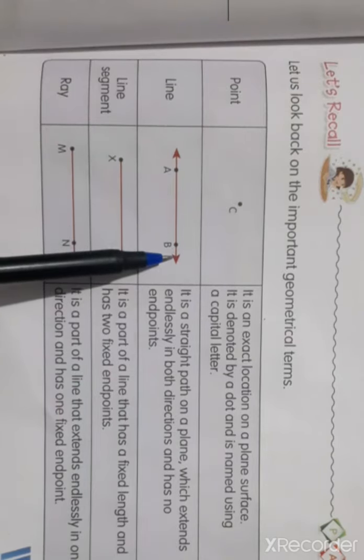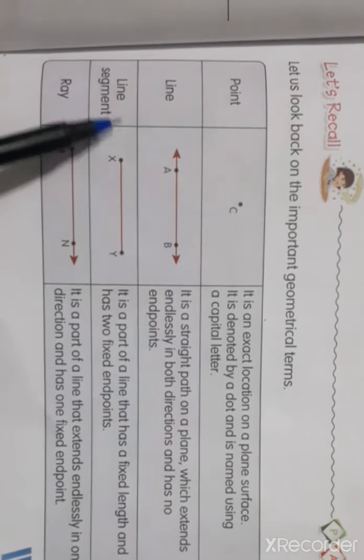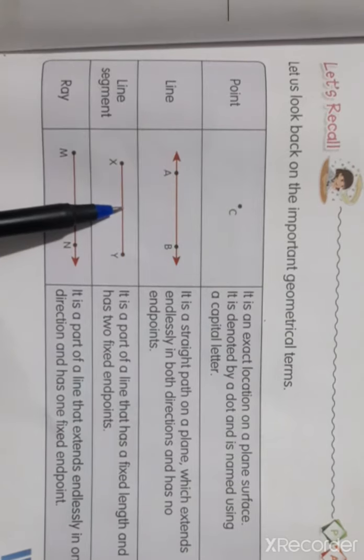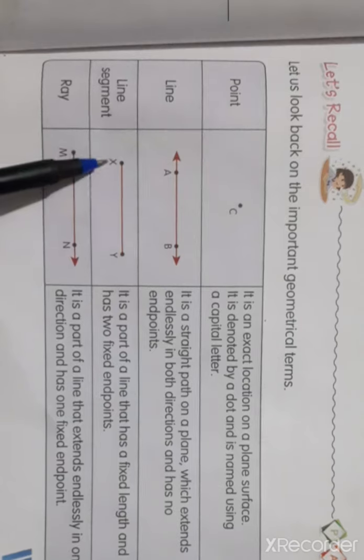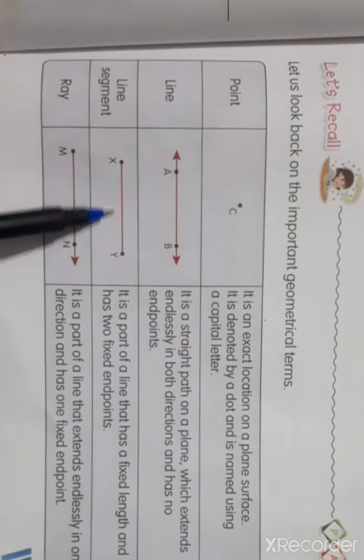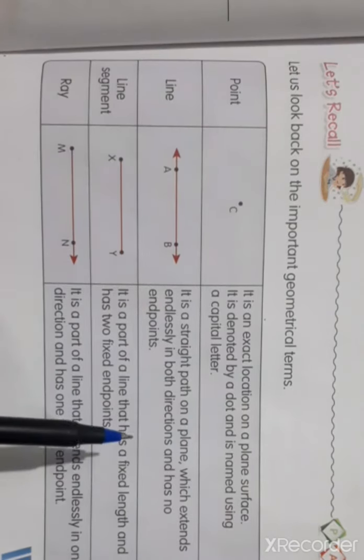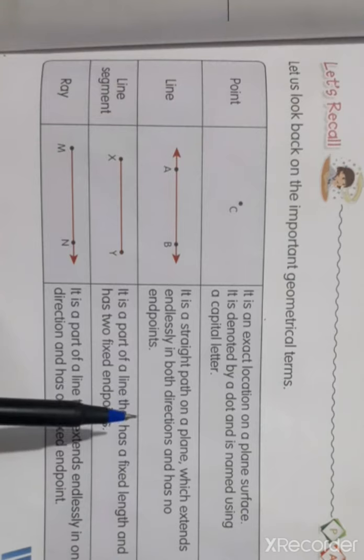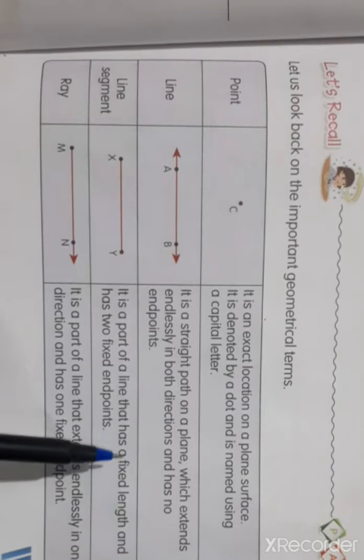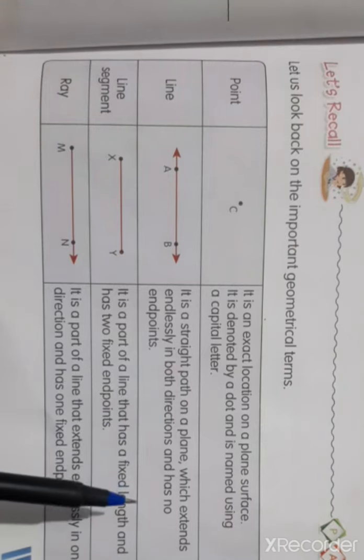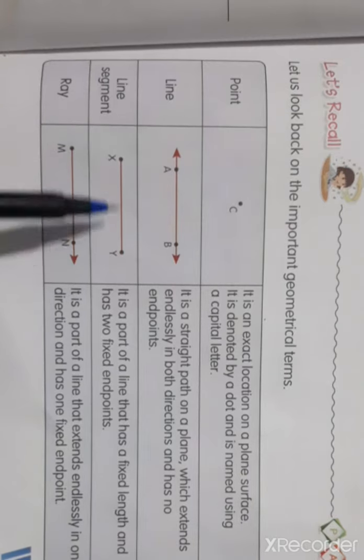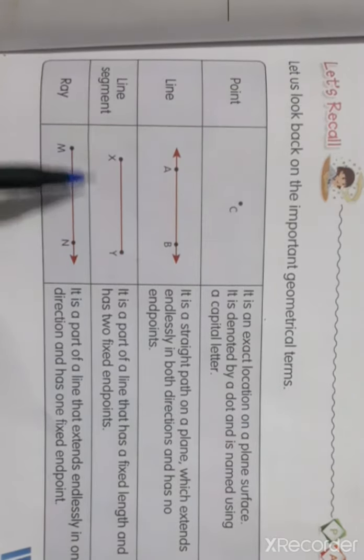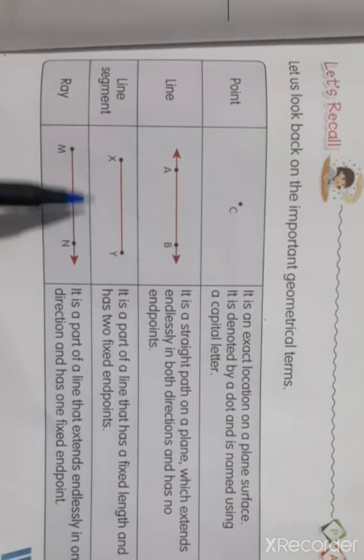So we put the arrow. In line segment there is an end point. It is a line that has the fixed length which we can measure and it has two fixed end points which we will name with capital alphabet.